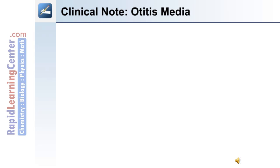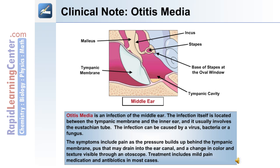The following is a clinical note on otitis media, or middle ear infection. The infection is located between the tympanic membrane and the inner ear and usually involves the eustachian tube. It can be caused by a virus, bacteria, or fungal infection. Symptoms include pain as pressure builds up behind the tympanic membrane, pus that drains into the ear canal, and changes in color and texture visible through an otoscope. Treatment includes mild pain medication and antibiotics in most cases.